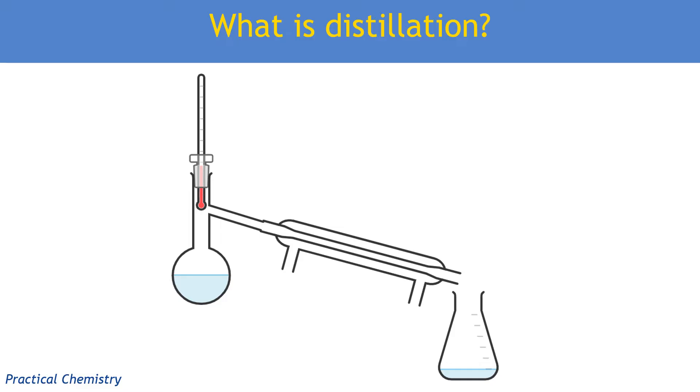Let's have a look at distillation. Distillation is used to separate what we call a miscible liquid from another miscible liquid, or they're miscible with each other. Miscible means the liquids mix together, so we can't use a separating funnel because they don't form two separate layers like, for example, a haloalkane and an aqueous layer might.